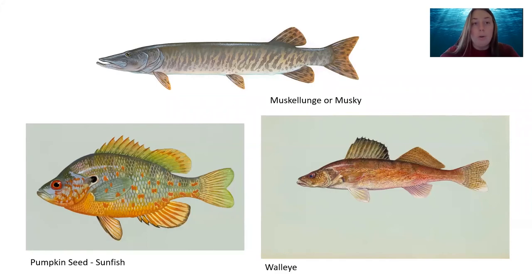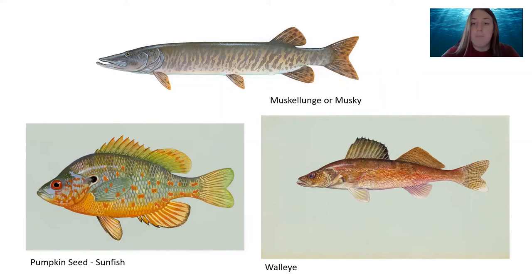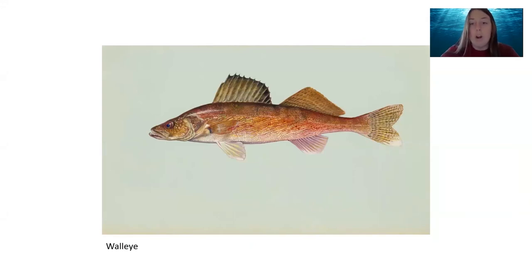Up above we have the muskellunge, or muskie. In the lower left is a pumpkin seed sunfish — there are many species under the sunfish title, but this specific one is the pumpkin seed. In the lower right we have the walleye. Which one of these fish has a white spot on its caudal fin? That would be the walleye — if you look at its tail, the caudal fin, it has a large white spot in the lower part. That is a really easy way to identify the walleye, because sometimes people confuse it with the ring perch in the same area.